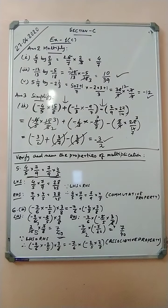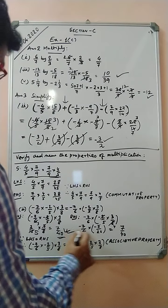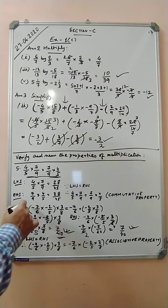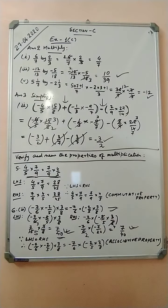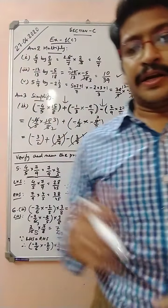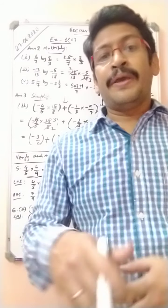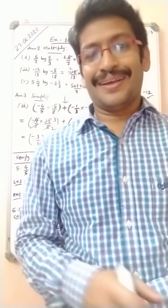Now the RHS: minus seven by six into the bracket minus two by five into three by eight. Solving the inner bracket first: minus two by five into three by eight gives minus three by twenty. Then minus seven by six into minus three by twenty — minus times minus is plus — gives seven by forty. LHS equals seven by forty and RHS equals seven by forty, so this is verified by the associative property. We have completed questions 2, 3, 5 and 6. In the next video we will proceed with the other questions.